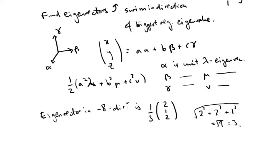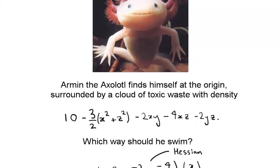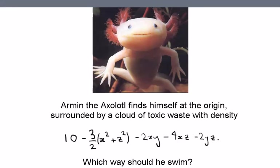Okay, so the answer is that Armin the axolotl should swim in this unit direction, and thereby escape the toxic cloud of waste, making him extremely happy.